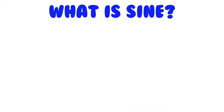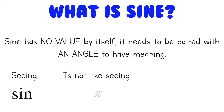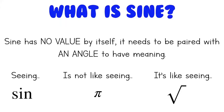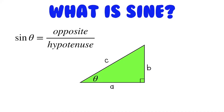Let's talk about sine. What is sine? The first thing you should know is that sine has no value by itself — it needs to be paired with an angle to have meaning. Seeing sine by itself is like seeing a square root with nothing in it; it doesn't make any sense. The sine of any angle in a right triangle gives you the ratio of the opposite leg over the hypotenuse. So the sine of theta gives the ratio of the opposite leg b over the hypotenuse c — sine of theta equals b over c.